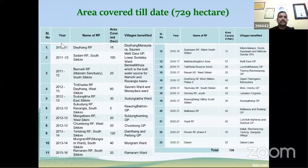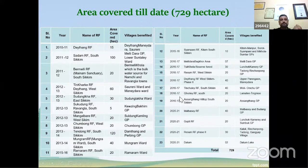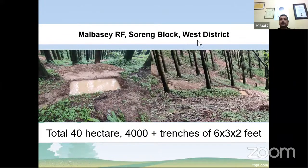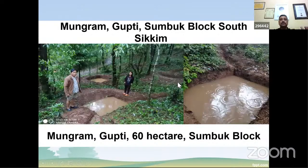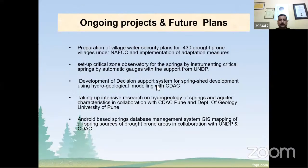Overall, since 2010 to 2021, we have covered about 721 hectares of land with spring shed intervention in our state. Recently done works include 40 hectares in West Sikkim, 50 hectares in West Sikkim, and 60 hectares in South Sikkim. This is how we are doing the spring shed work.